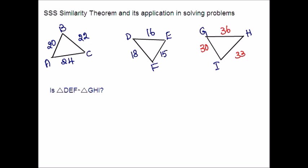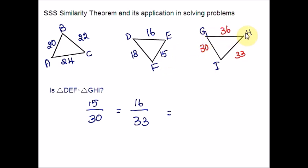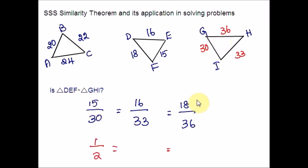Shortest over shortest: 15 and 30. Second shortest from DEF and second shortest from GHI: that is 16 and 33. Longest side from triangle DEF and longest side from GHI: 18 and 36. Now let us reduce these fractions. 15 over 30 can be reduced to 1 over 2. 18 over 36 can also be reduced to the ratio 1 over 2.